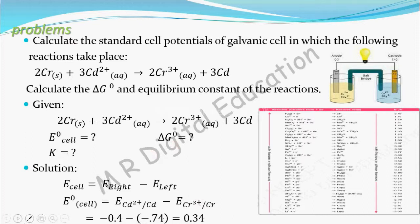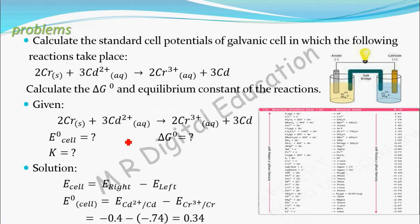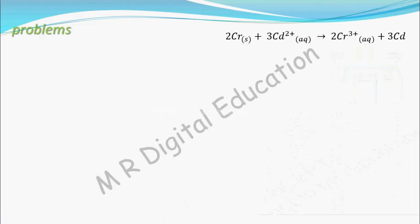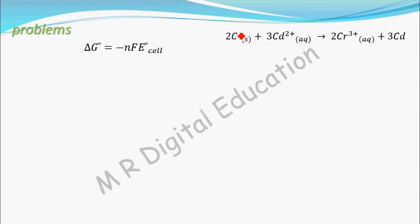Now we have to calculate delta G naught. You know the relation between delta G naught and E naught cell: delta G naught equals minus n F E naught cell. We have already calculated E naught cell as 0.34 V. F is the Faraday constant. Now we need to find what the value of n is. In this reaction, chromium is undergoing oxidation.